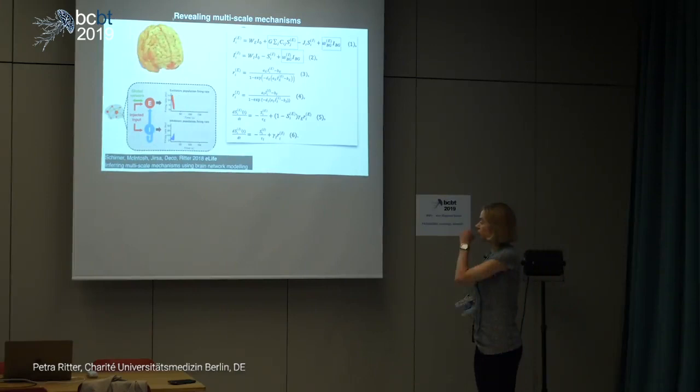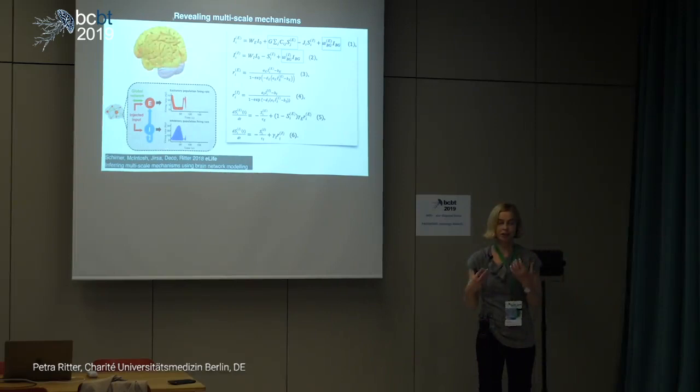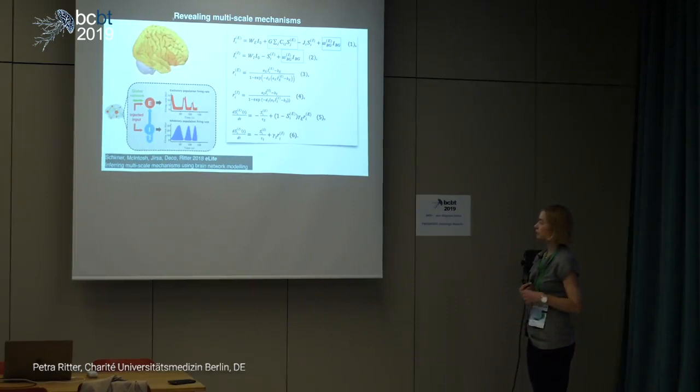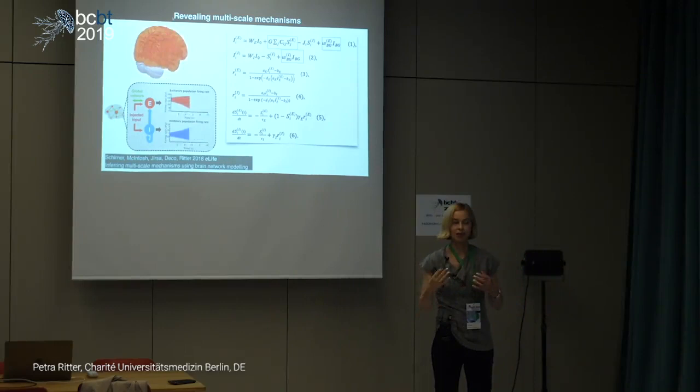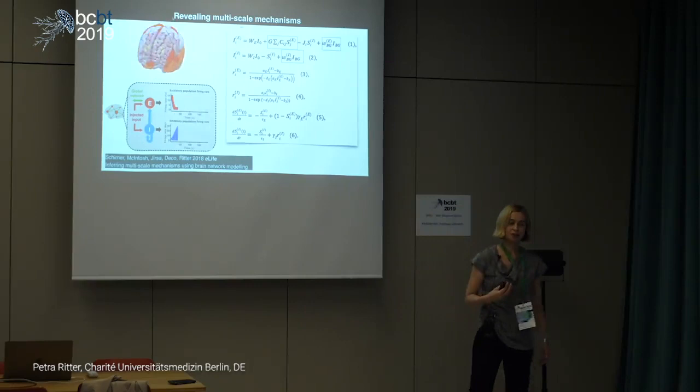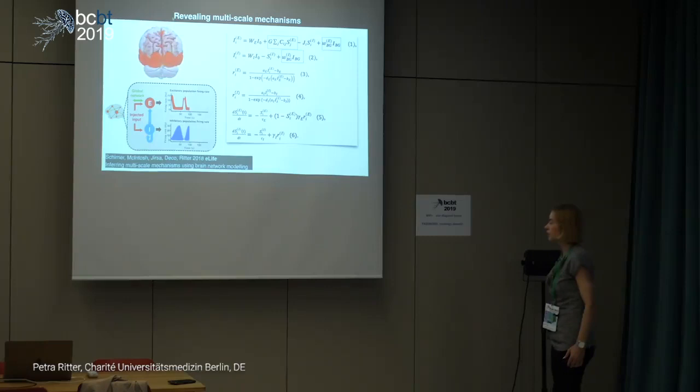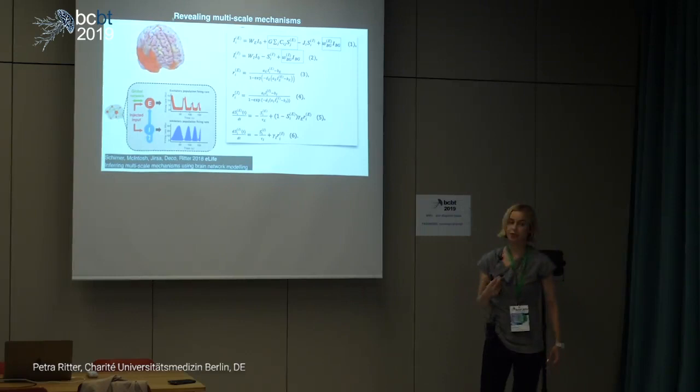The virtual brain gives us a method to think about complex theories of brain function and make predictions that can then be tested experimentally. If you had to think about the brain only with the power of your mind or formulate it semantically, that would be impossible because it is too complex. The virtual brain offers a tool to generate new theories and testable predictions.